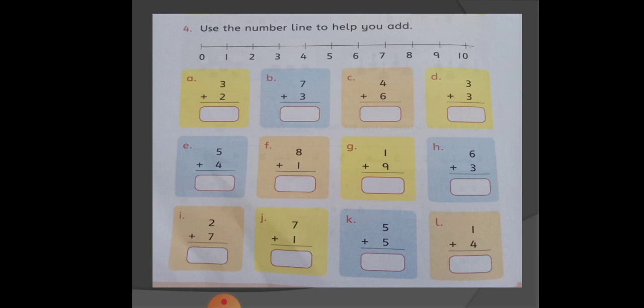In the third part, as you can see, 4 plus 6, so the answer will come 4 plus 6 is equal to 10. In the same way, in the fourth part, you will have 3 plus 3. So, in this way, your answer will come 3 plus 3 is equal to 6. In the same way, you will solve the remaining parts.